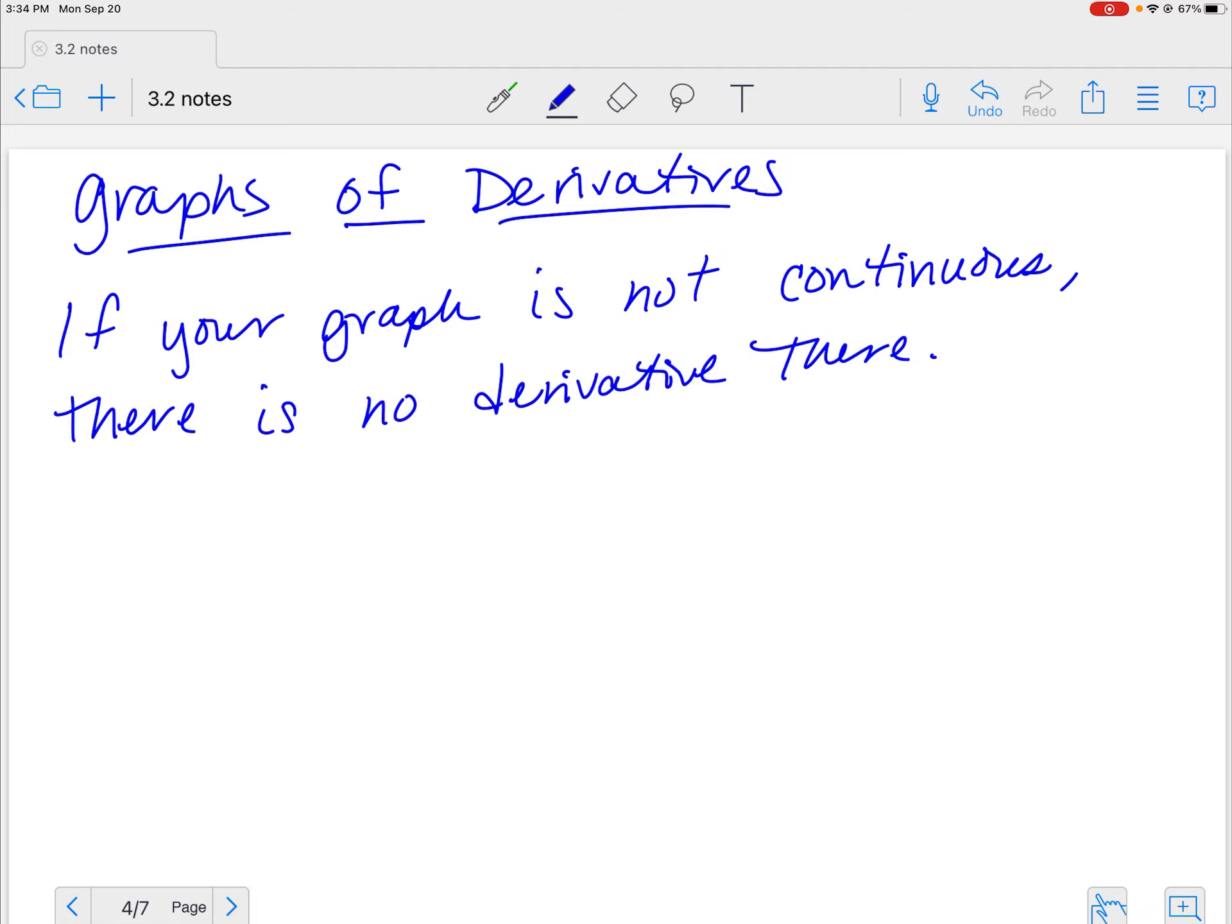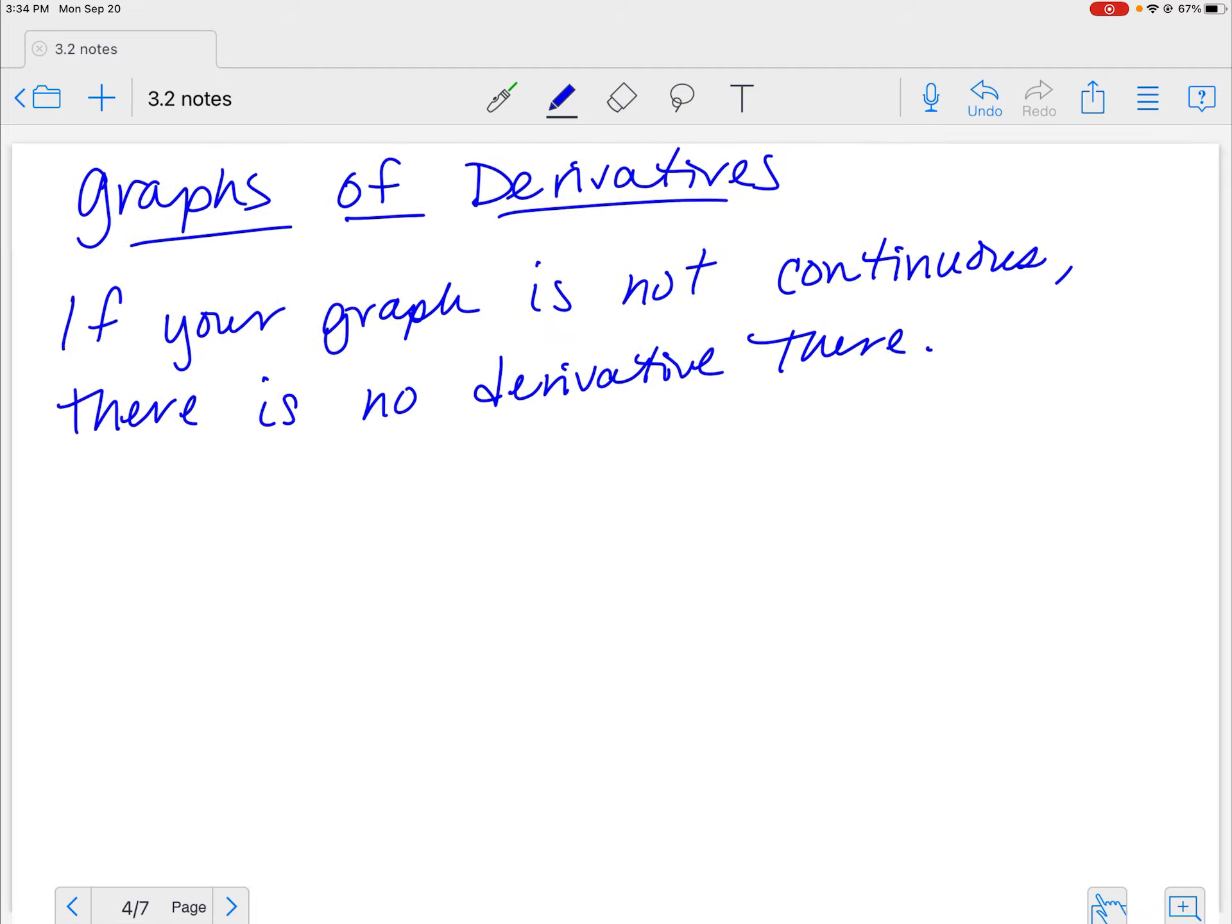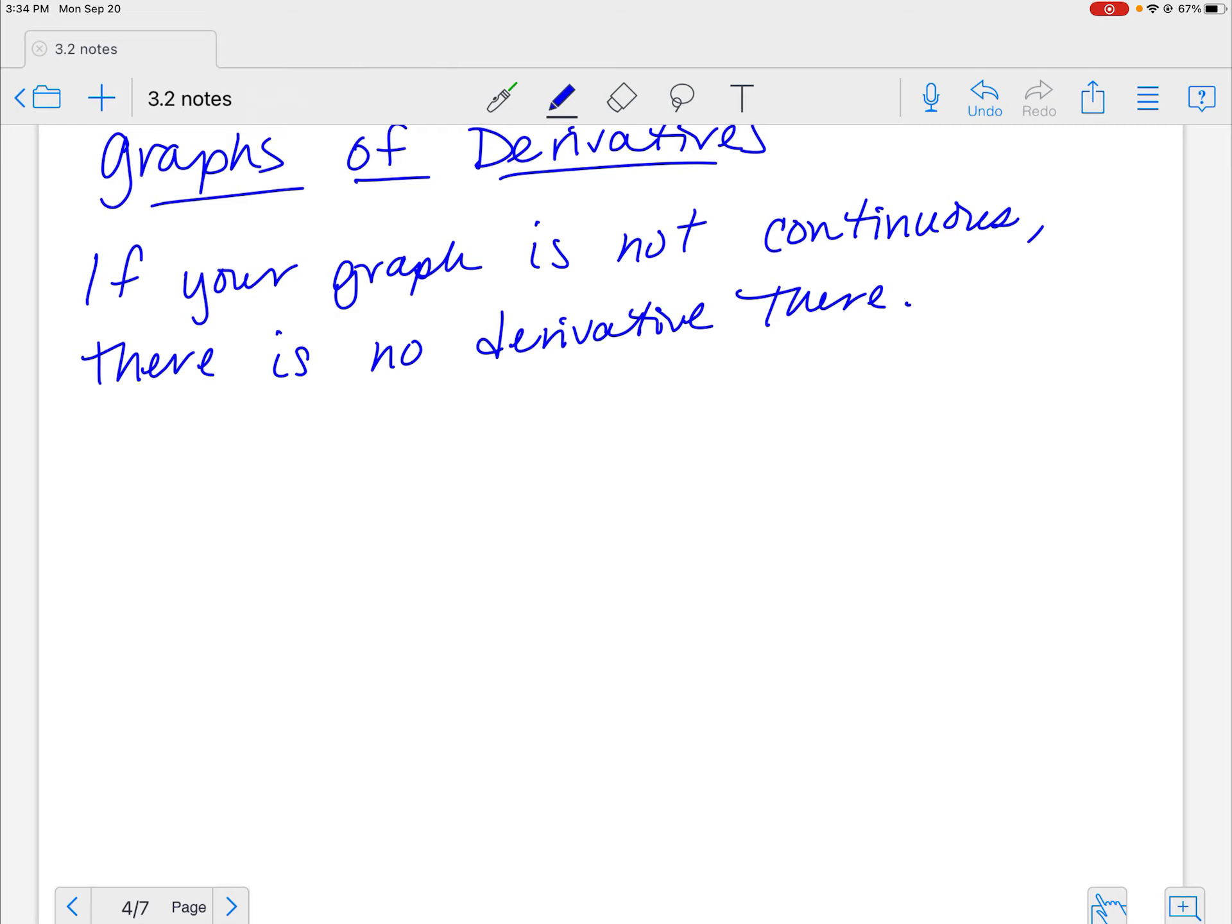However, there are some other scenarios that we need to be taking a look at that does not have a derivative also. If I have this graph and it comes in like this, that's called a cusp. A cusp is when it comes to the point. There is no derivative at a cusp.